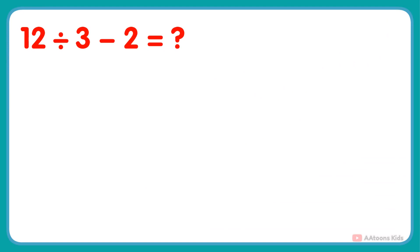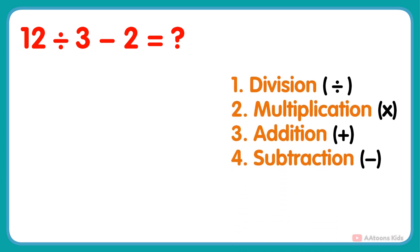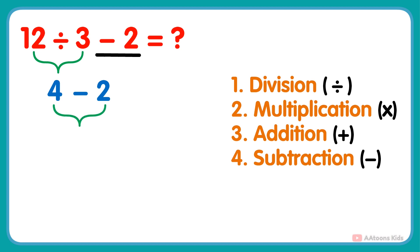What is 12 divided by 3 minus 2? In this problem, two operations — division and subtraction — are given. So according to the order, we would first perform the division: 12 divided by 3 gets 4. And next, subtract 2 from the result, and you will get your answer: 4 minus 2 equals 2.